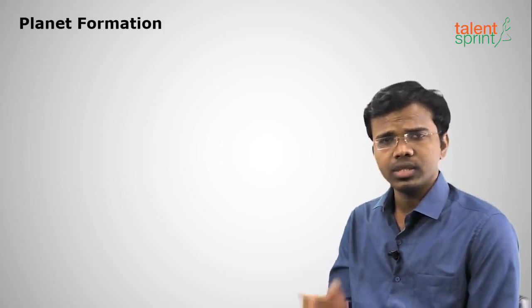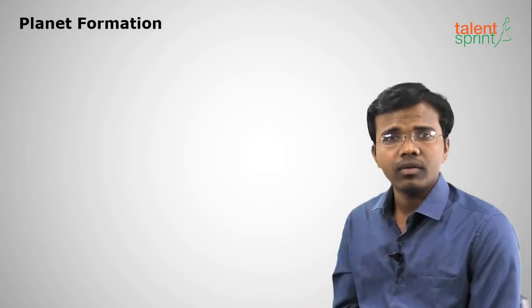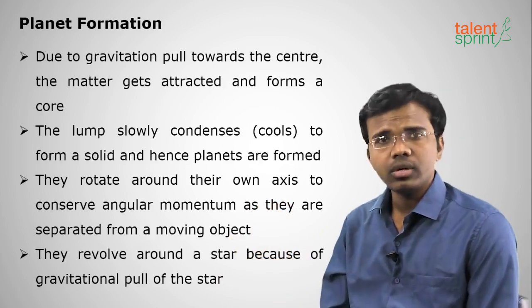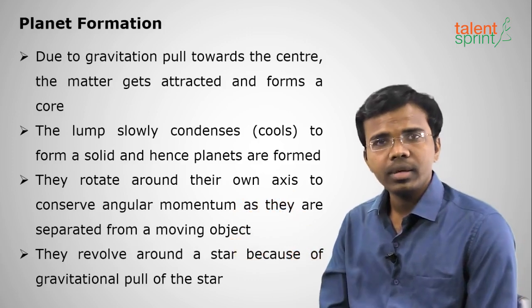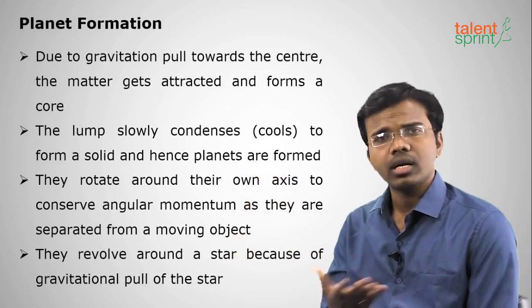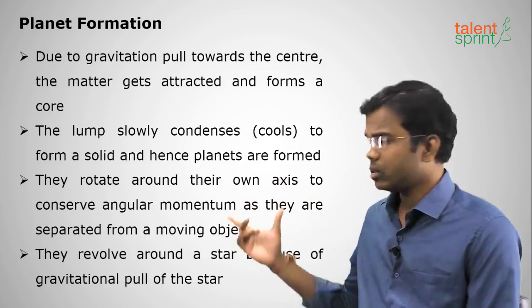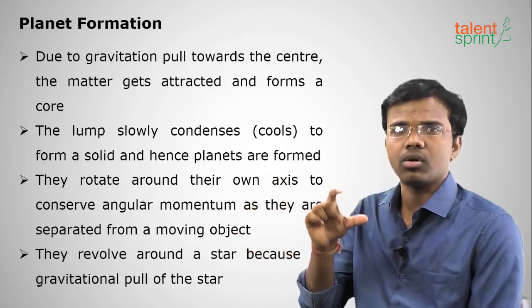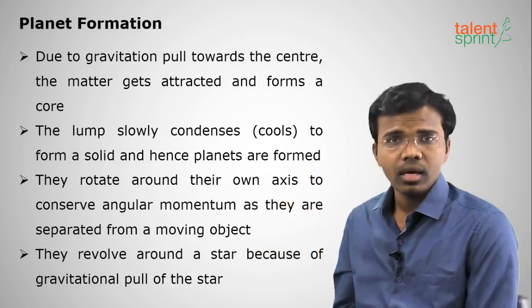Star formation involved condensation — temperatures cooled down and matter formed. For planet formation, due to gravitational pull, all matter is attracted toward the center and forms a core. It slowly cools down and condenses to form a bigger body. These are called planetesimals — all planetesimals gathered together and formed a planet.